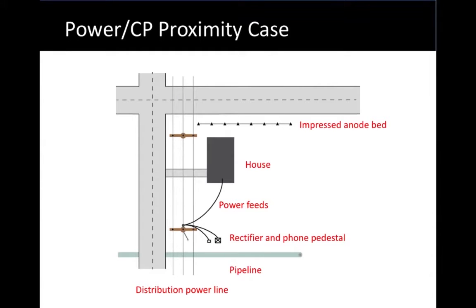Let's look at a case that we ran into that involved this very scenario and demonstrated it very well. The objects in the story would be a house that takes power from the utility and some other objects nearby that also receive power — a rectifier. There was also a phone company pedestal that was bonded in; it doesn't receive power but is bonded into that same system. A power distribution system runs down the road and serves those two customers, who are different customers. Nearby we have a pipeline that the rectifier is serving, but the impressed current anode bed is on the far side of the residence — so the house is between the pipeline and the anode bed. Perhaps you can see where this is going.